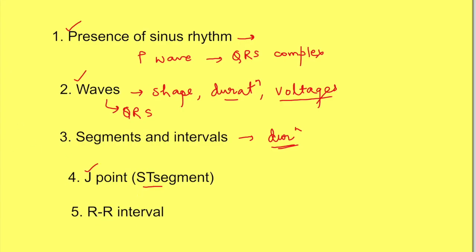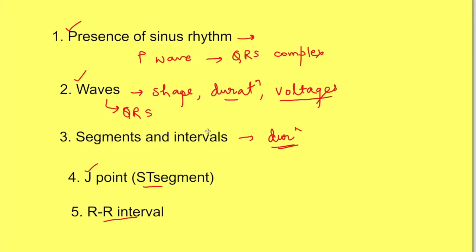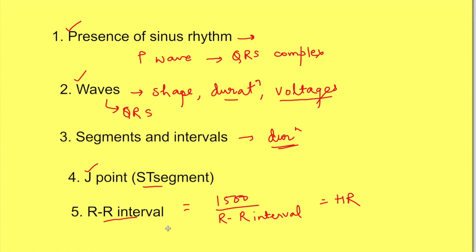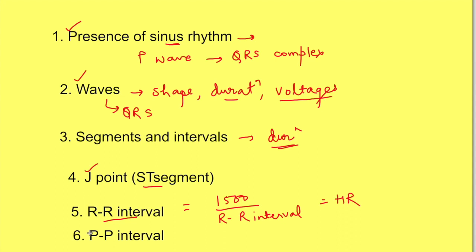Next, look at the RR interval, which gives information about heart rate. Count the number of small squares between the peaks of two R waves, then use the formula: heart rate = 1500 divided by the RR interval (in number of small squares). This is used when sinus rhythm is present. If sinus rhythm is absent — not all P waves are followed by QRS — use the PP interval for atrial rate and the RR interval for ventricular rate.